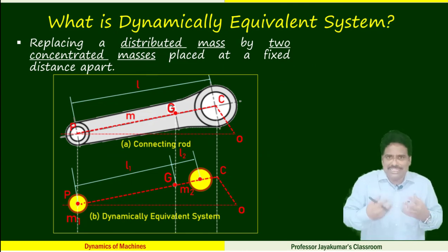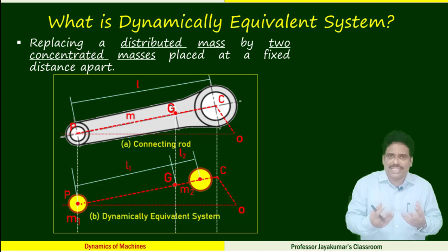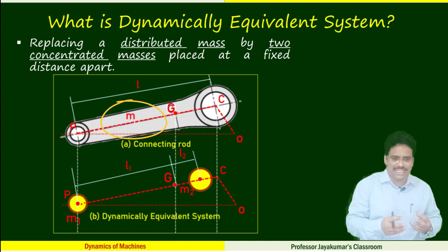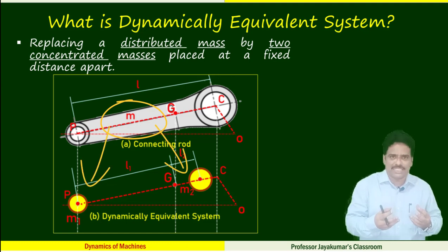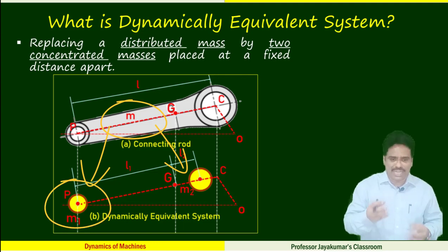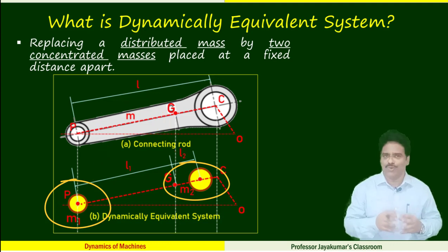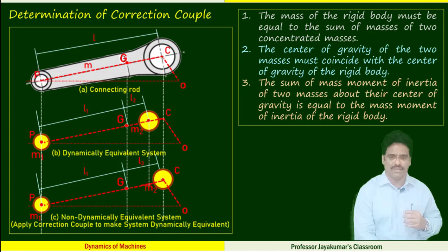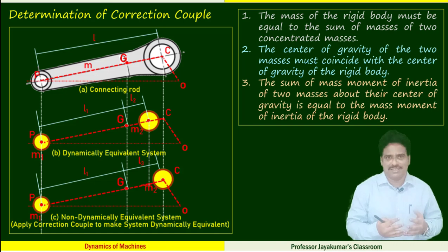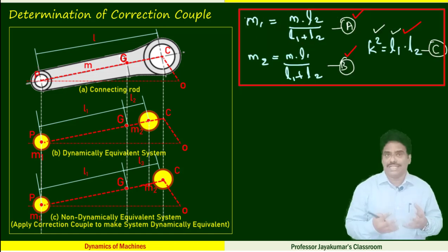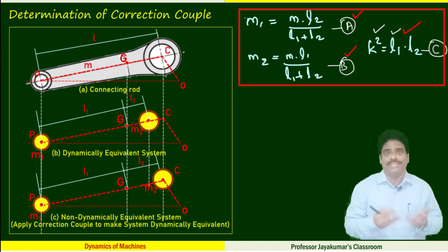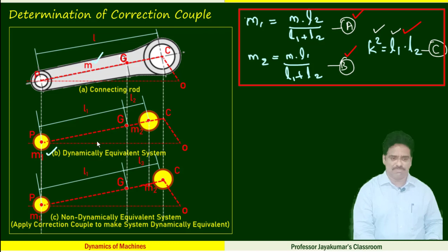For our convenience, theoretically we would like to replace the mass of the connecting rod by two concentrated masses. If M is the mass of the connecting rod, we replace it by two concentrated masses namely M1 and M2, as seen in the diagram. This is what we call the dynamically equivalent system. These are the three conditions applied so that we can technically call the obtained system dynamically equivalent. Based on these three conditions we get three expressions to determine M1, M2, L1, and L2. Note that L1 plus L2 is not equal to L.